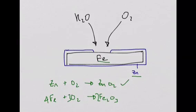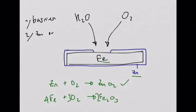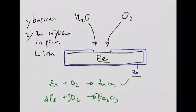So just to recap, it works, first of all, as a barrier method, and then secondly, let me write that down, one, it's a barrier method. Secondly, even if it's scratched, the zinc oxidises or reacts with oxygen in preference to the iron. It sacrifices itself.